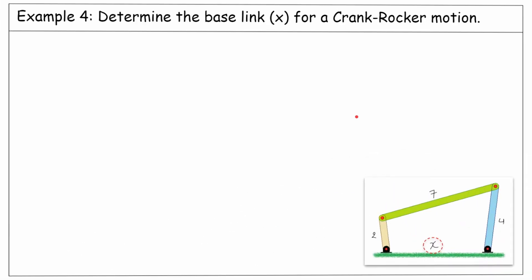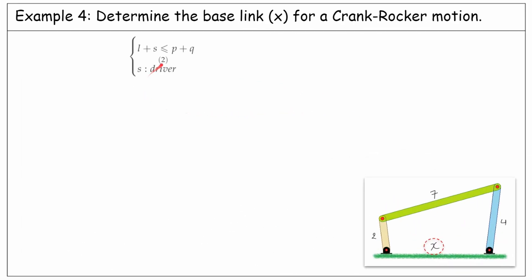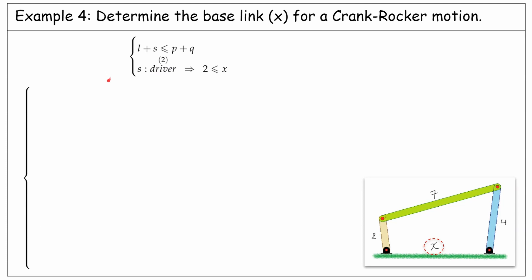Now, for a crank-rocker motion, there are two Grashof requirements: L plus S must be less than or equal to P plus Q, and the shortest link should be the driver. We should notice that for the driver to be the shortest, we need to keep the base longer than that. So the base should be greater than or equal to 2 unit lengths. For substituting the lengths in the Grashof's condition, we have no idea whether the base is the shortest, longest, or one of the other two links. Therefore, we need to check all of the cases: if X is the shortest, the longest, or either of P or Q.